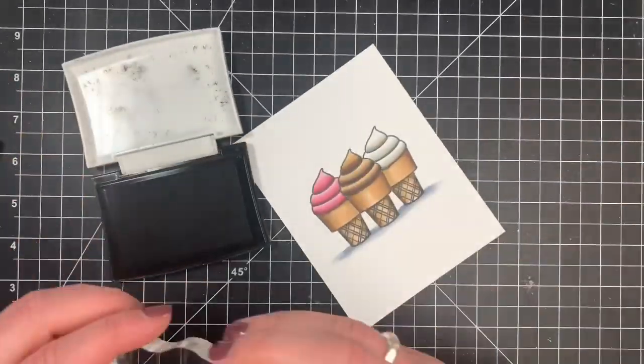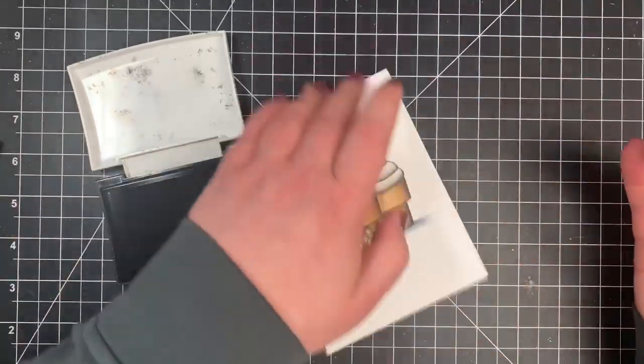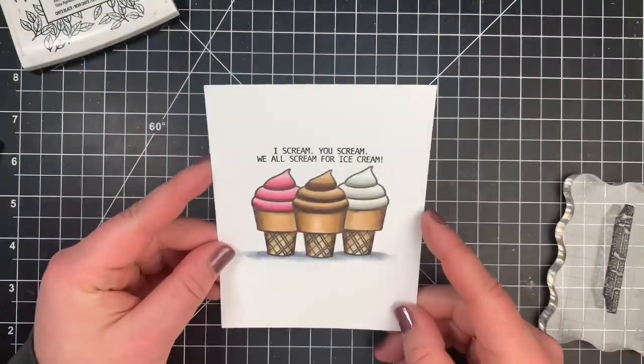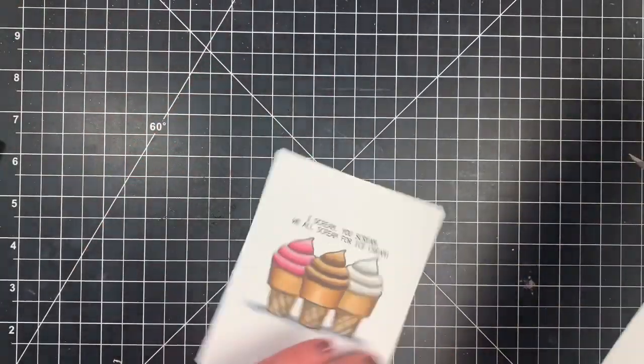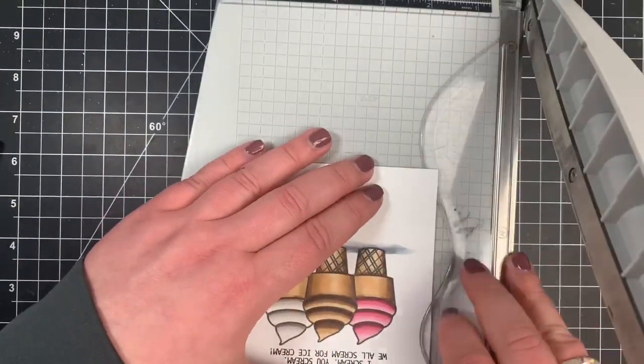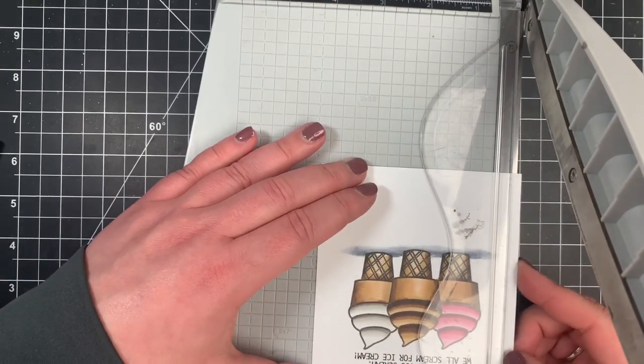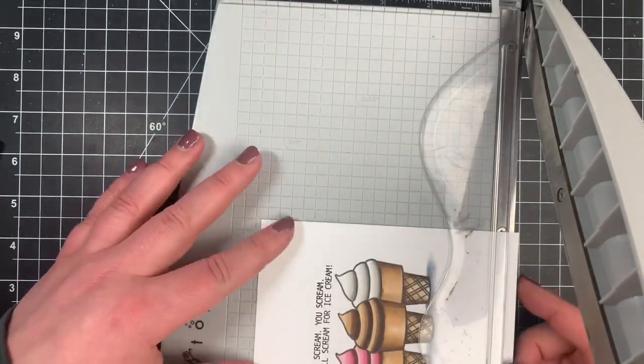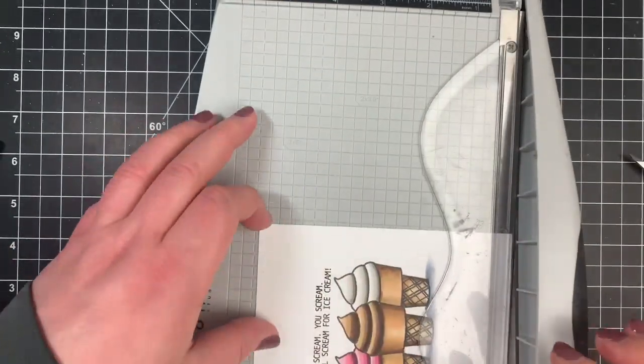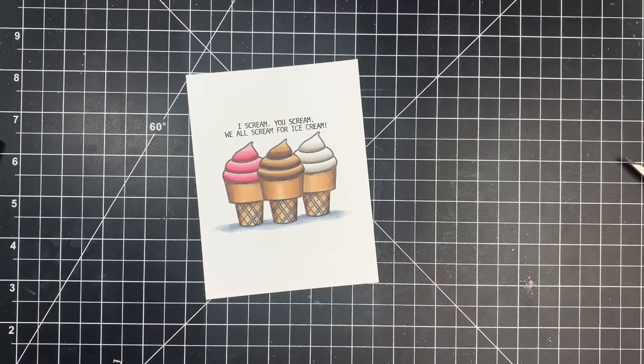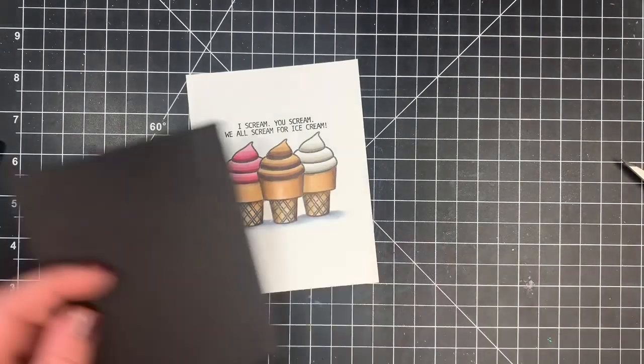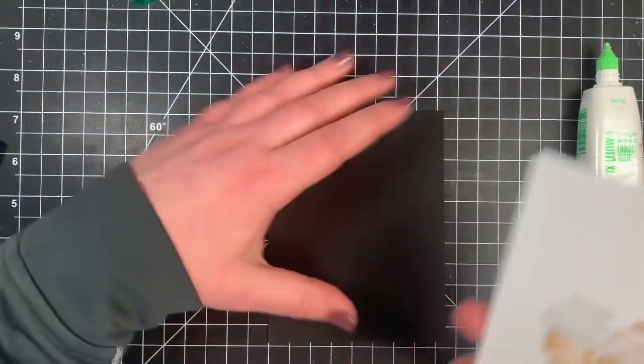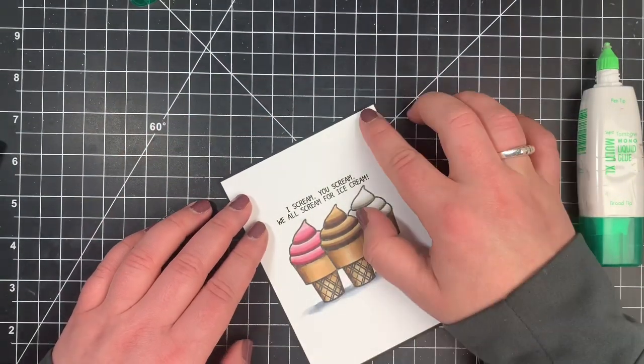For this card, I simply stamped out one of the sentiments from this stamp set with VersaFine Onyx Black ink directly above my images. I trimmed down this panel just a little bit and adhered it to a black card base. I didn't use any dies for this - I kept all of these super simple. You do not need a ton of supplies to create cards. I know it's great to get the latest and greatest of everything, but you can still have fun creating cards even when you're low on supplies.